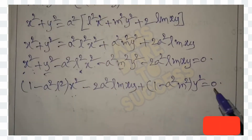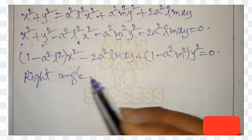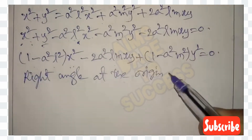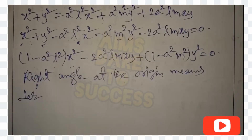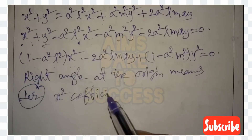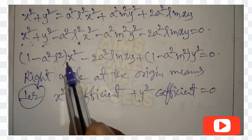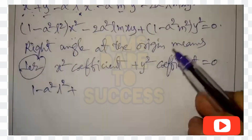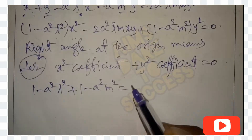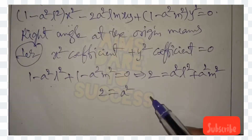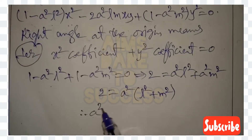According to the question, right angle at the origin means mutually perpendicular. The condition for a right angle at the origin is: coefficient of x² + coefficient of y² = 0. That is, (1 - a²l²) + (1 - a²m²) = 0. So 1 + 1 = a²l² + a²m², giving 2 = a²(l² + m²). This is the required condition.